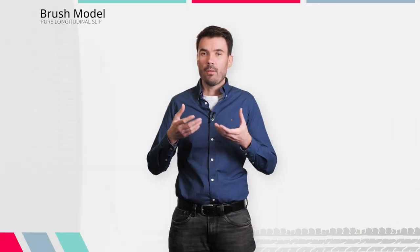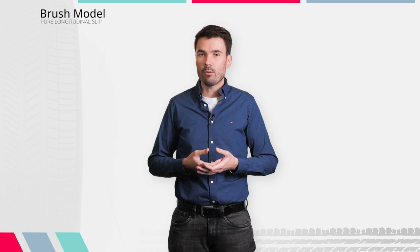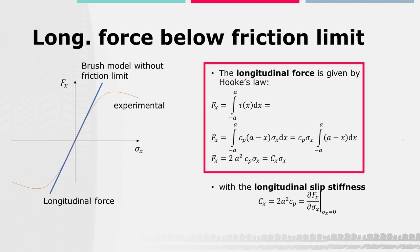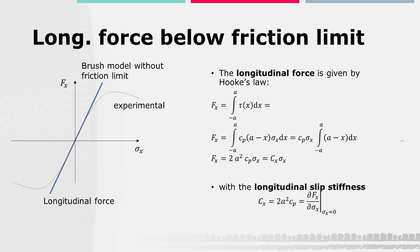Welcome back to the second part of this lecture. In case the whole contact area is still in adhesion, or sticking, the longitudinal force is given by Hooke's law. We can determine the longitudinal force by integrating the local shear stress tau of x from point minus A, where the brush element leaves the contact patch, to point A, where the element enters the contact patch. This results in the longitudinal force being proportional to the longitudinal slip sigma_x by the factor 2 times the square of A times the bristle stiffness Cp.